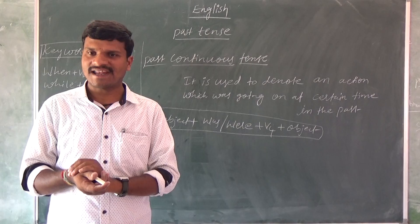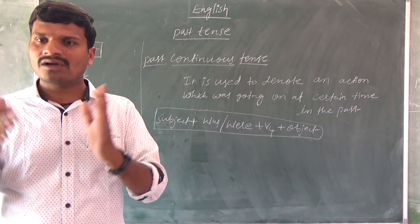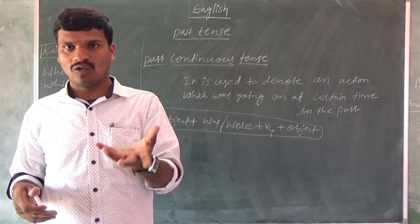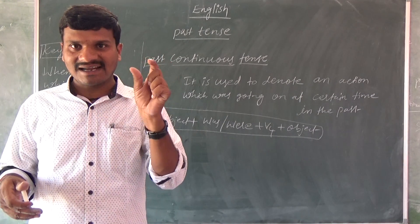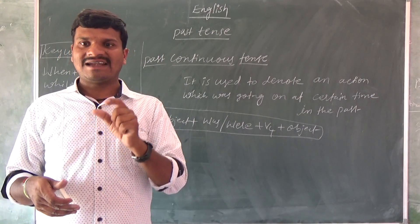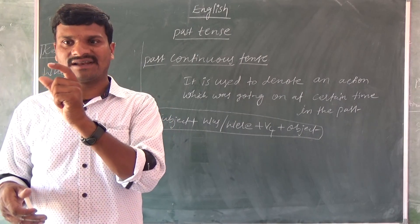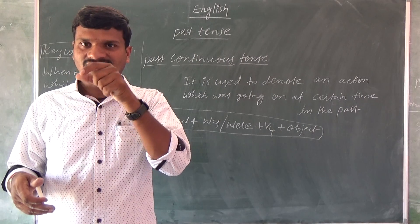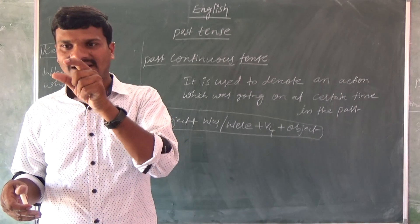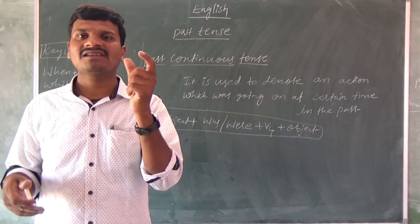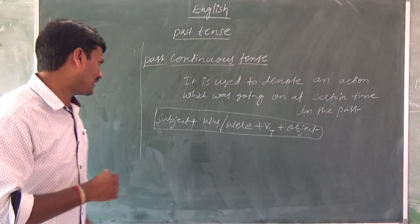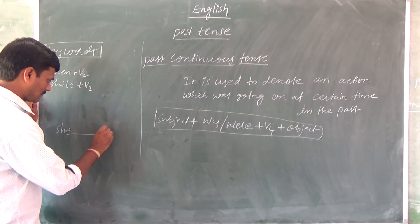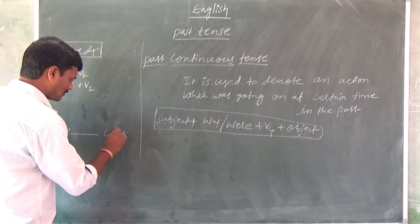Now I will write the structure. Subject, verb — was or were — plus V4. V4 is nothing but the ing-form. So the structure of past continuous tense is: subject + was/were + verb plus V4.